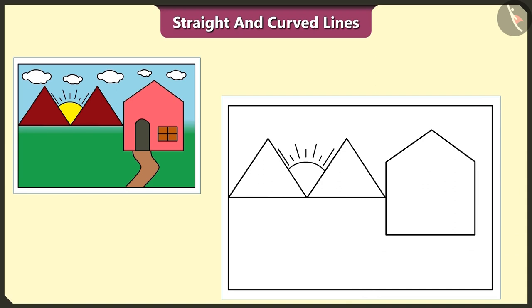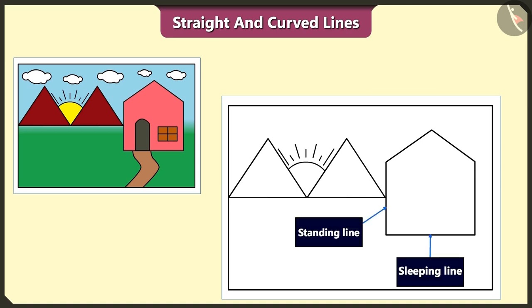So, here which of these lines are straight? Here, the standing line, the sleeping line, and the slanting lines are all straight lines.